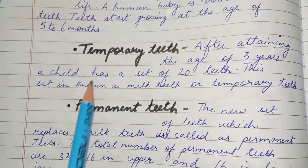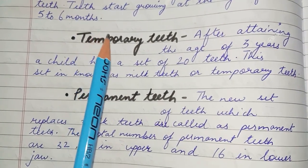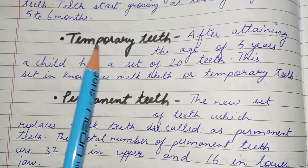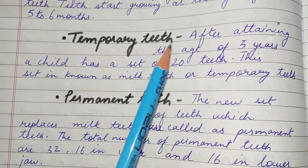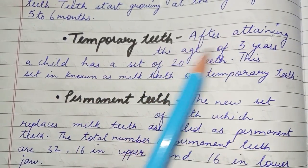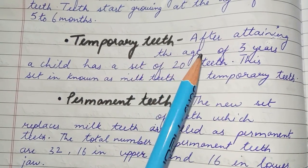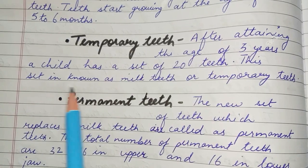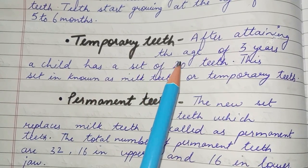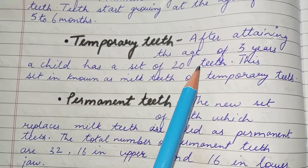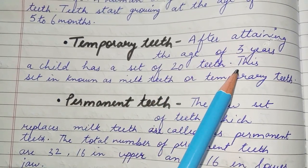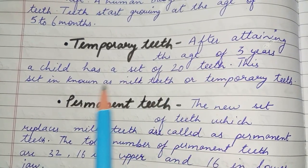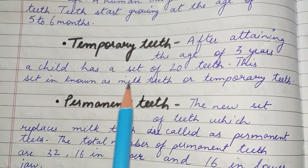The topic of teeth is categorized into two categories. The first category is temporary teeth. After attaining the age of three years, a child has a set of twenty teeth. This set is known as milk teeth or temporary teeth.